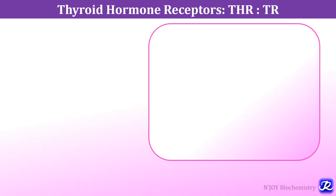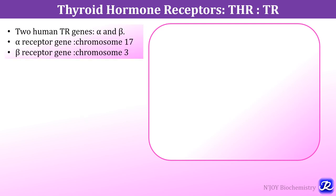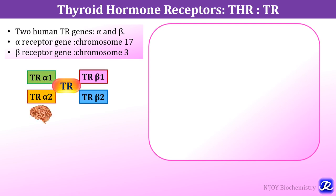The genomic pathway of thyroid hormone action includes thyroid hormone receptors, abbreviated as THR or TR. There are two human TR genes, alpha and beta. The alpha receptor gene is located on chromosome 17 while the beta receptor gene is located on chromosome 3. There are various isoforms: alpha 1, alpha 2, beta 1 and beta 2.